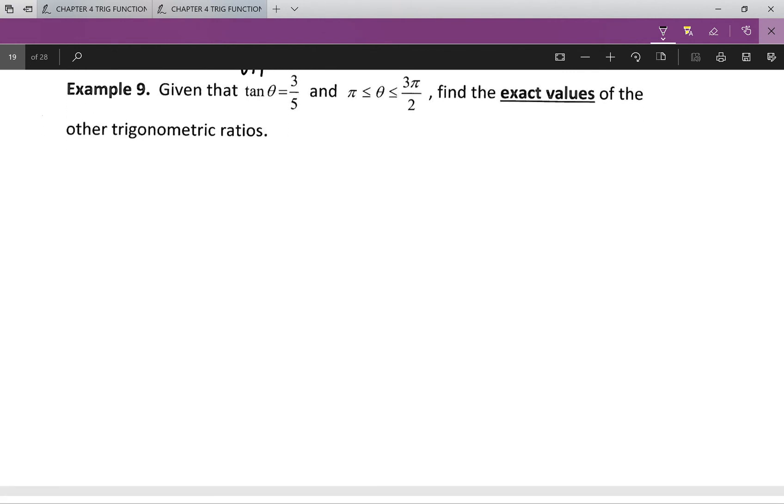Given tan theta equals 3 over 5, and in this case we're in quadrant 3. Because if we look, again, pi by 2, pi,